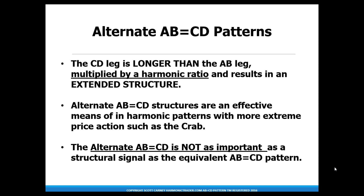The AB equals CD alternate structure is a formation where the CD leg is longer than the AB measurement, and we multiply that initial AB leg by a harmonic ratio. This extended structure is still a harmonic ABCD because of the ratios used, and they are as effective in harmonic patterns, but really relate to more extreme price action in patterns such as the CRAB.